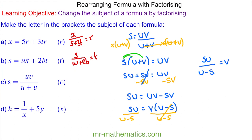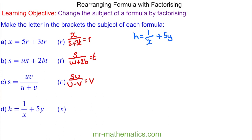For question d we're going to make x the subject, but x is currently the denominator. We need to move this denominator and we can do this by multiplying every term by x, because this division and multiplication will cancel. So we have hx is equal to 1 plus 5yx.